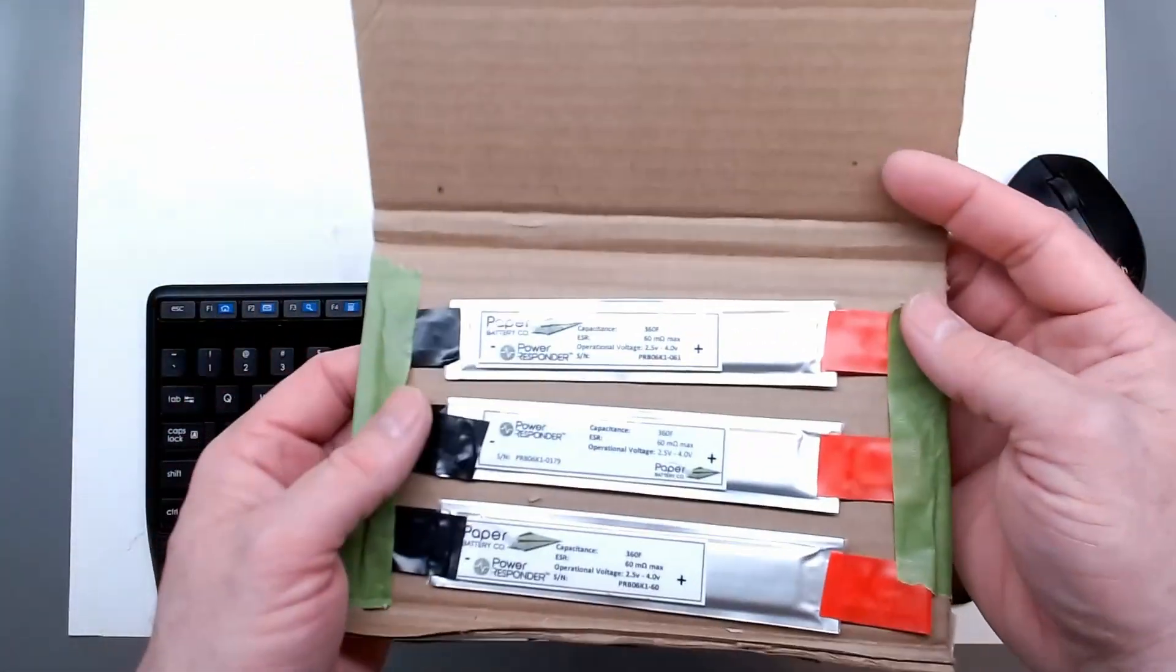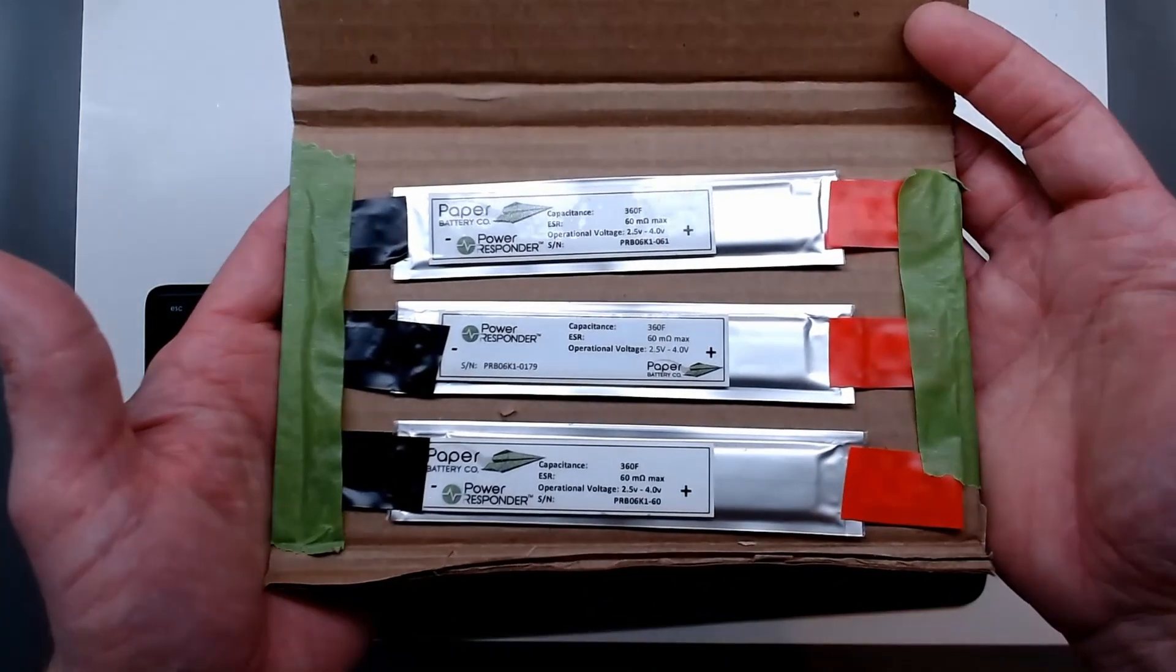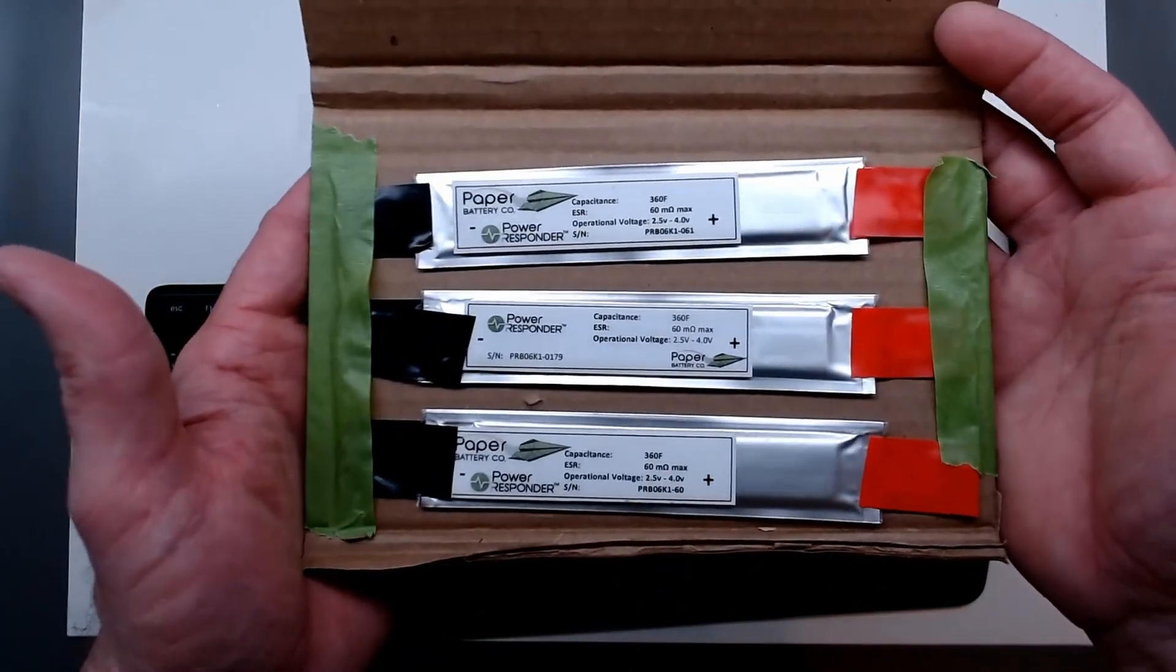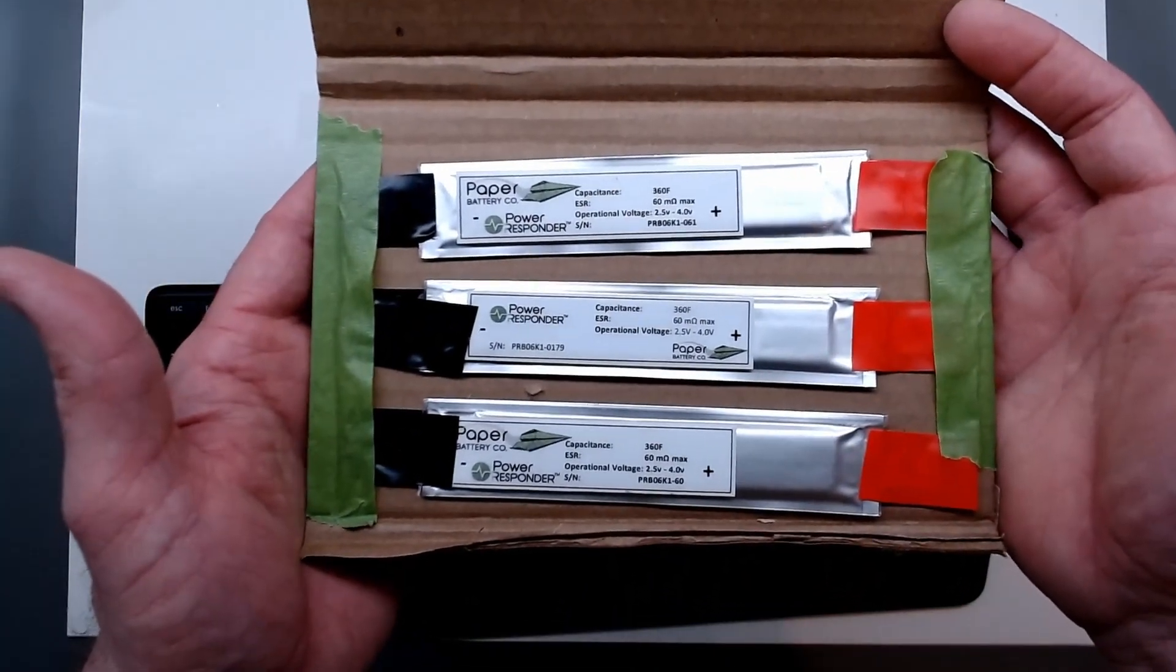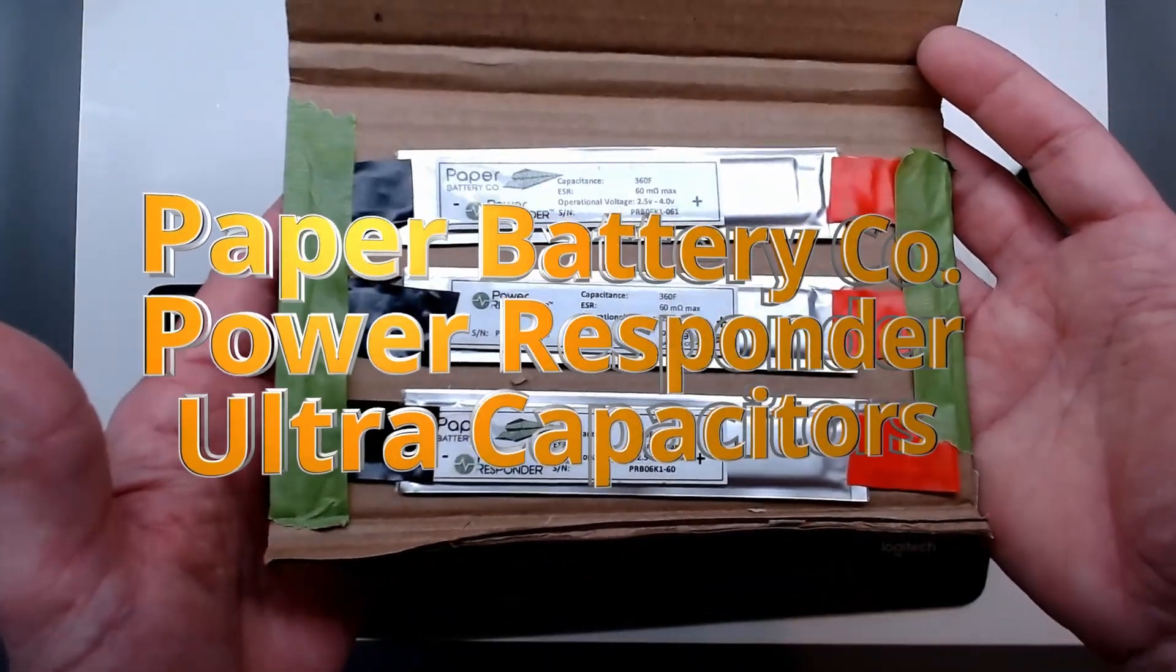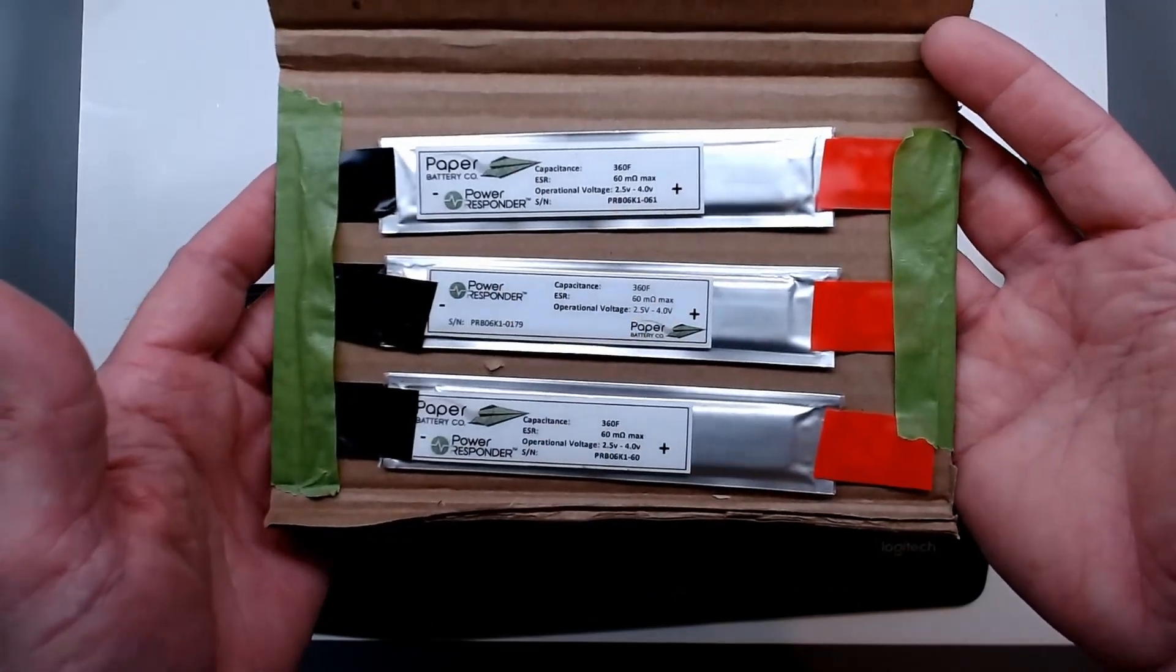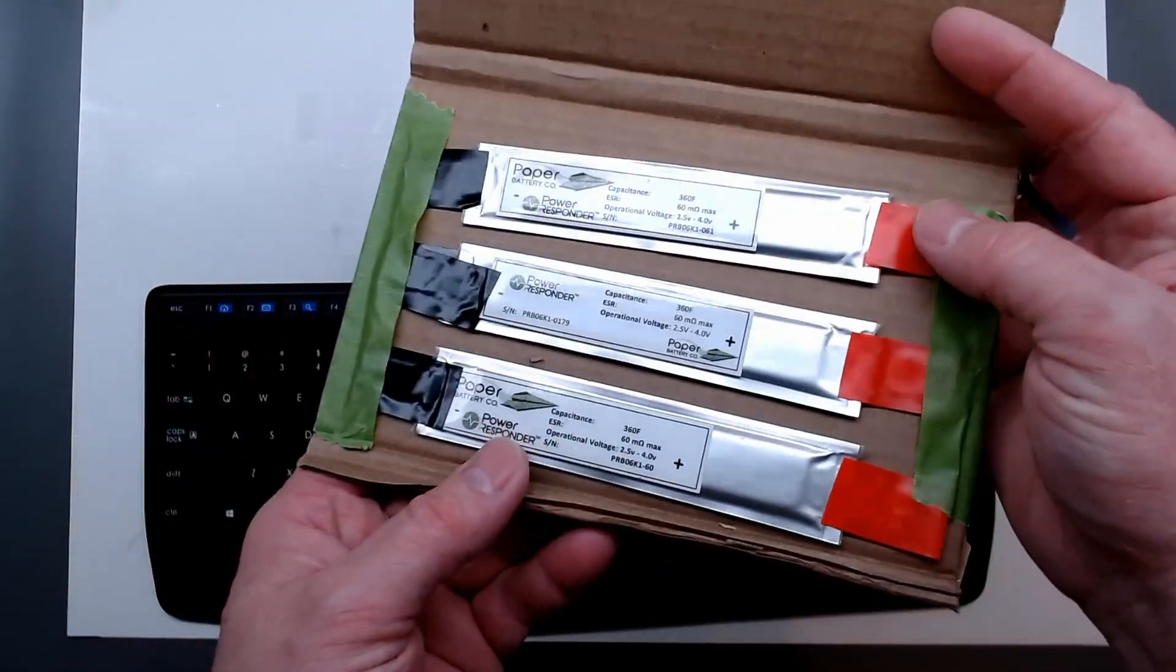Today I want to take a look at these Paper Battery Company Power Responder capacitors. These can be charged up to four volts each and each are rated for 360 farads. I really like how thin these are and how much capacitance they have for the density. I'm going to get these out of the package and get them on the bench here.